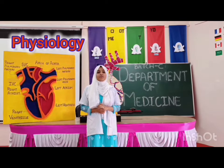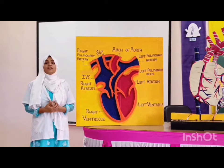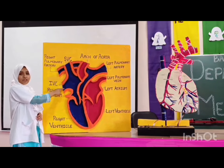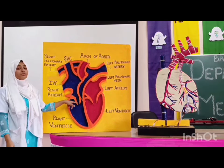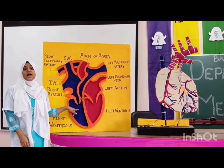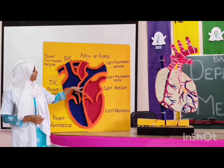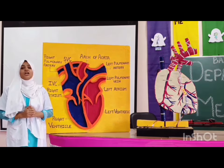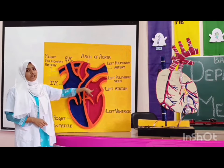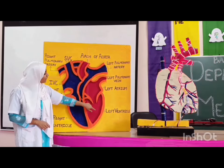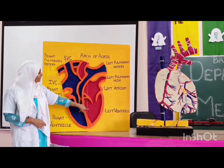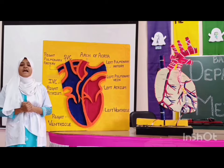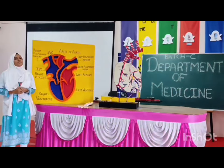After learning anatomy, we will proceed to the physiology of the heart. Deoxygenated blood from various parts of the body enters the right atrium through the superior vena cava and inferior vena cava. This blood enters the right ventricle through the tricuspid valve. The deoxygenated blood then enters the lungs for oxygenation through the pulmonary artery. The oxygenated blood returns to the left atrium through the pulmonary veins, entering the left ventricle through the mitral valve. From the left ventricle, oxygenated blood enters the aorta through the aortic valve and is distributed to all tissues of the body.